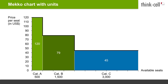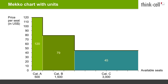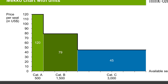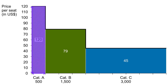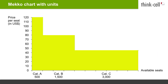Let's assume that you would like to create a chart that shows the total revenue of a concert hall in terms of its three seat categories. This can be done by using a Mecco chart with units. The area of each segment instantly conveys the absolute revenue for each seat category. Each segment area is the product of the number of seats and price per seat. Furthermore, the total area of all Mecco segments visually represents the total revenue itself.